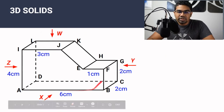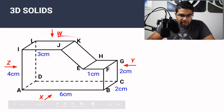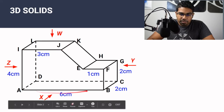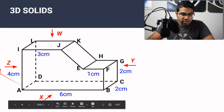This is a 3D solid, a three-dimensional solid. So here we have many different faces and the vertices — these have already been lettered — and these are called edges. The dimensions are also given.